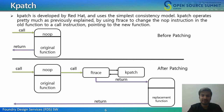Kpatch uses a simple consistency model. It operates by using Ftrace to change the NOP instruction in the old function to a call instruction pointing to the new function. Kpatch keeps the system consistent by first stopping all running tasks. The stack traces of each task are then examined. If the old function is not found in any of the task stack traces, then Ftrace applies the patch and all future calls to the patched function will now use the new function.